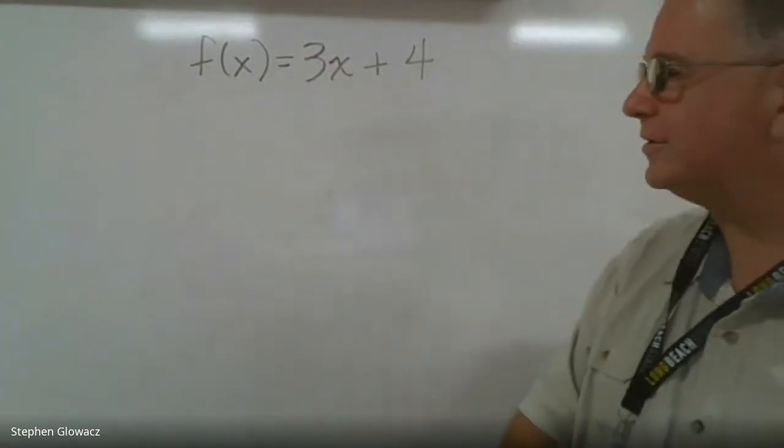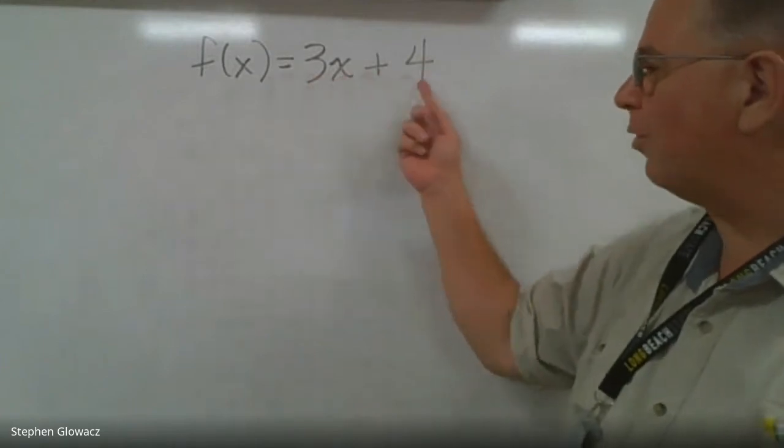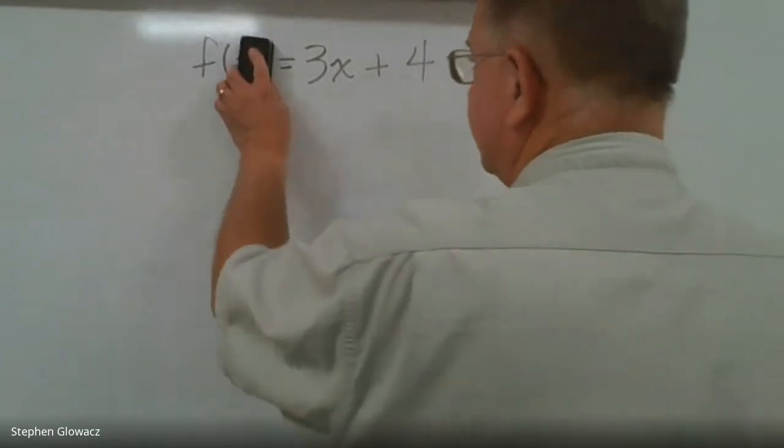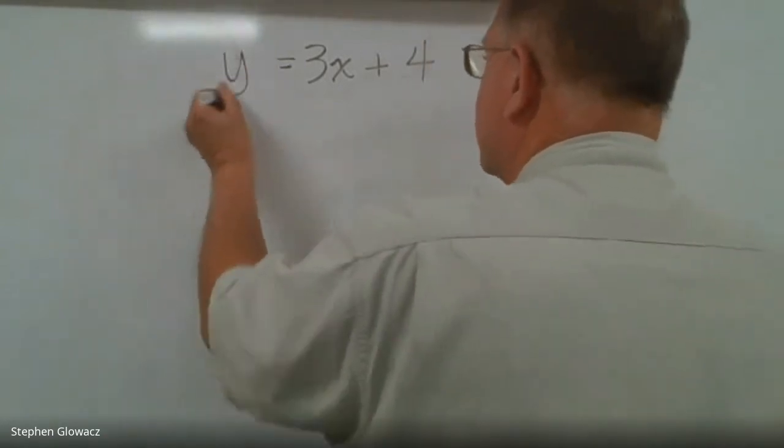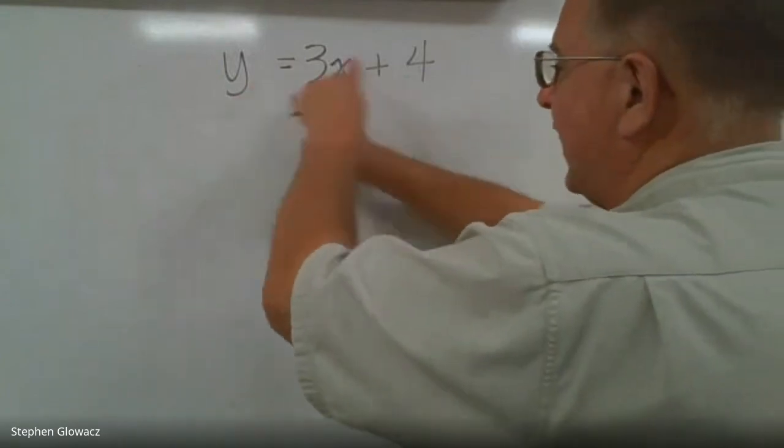This is how you find the inverse of a function. We have f(x) = 3x + 4 and we're going to find the inverse. First, to make things easier, instead of f(x) use y, and it'll just make it easier to solve. Now we're going to switch the x and the y.